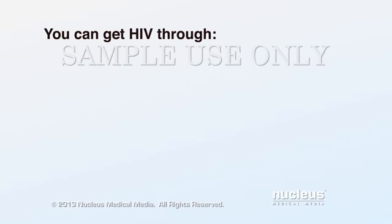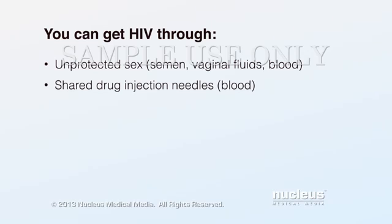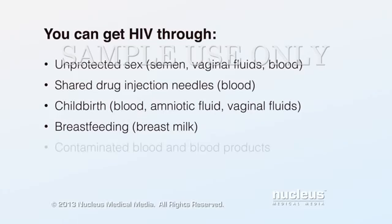HIV passes from person to person through infected body fluids. HIV can enter your body during unprotected sex, while sharing drug injection needles, during childbirth, while breastfeeding from your mother, or from contaminated blood or blood products.